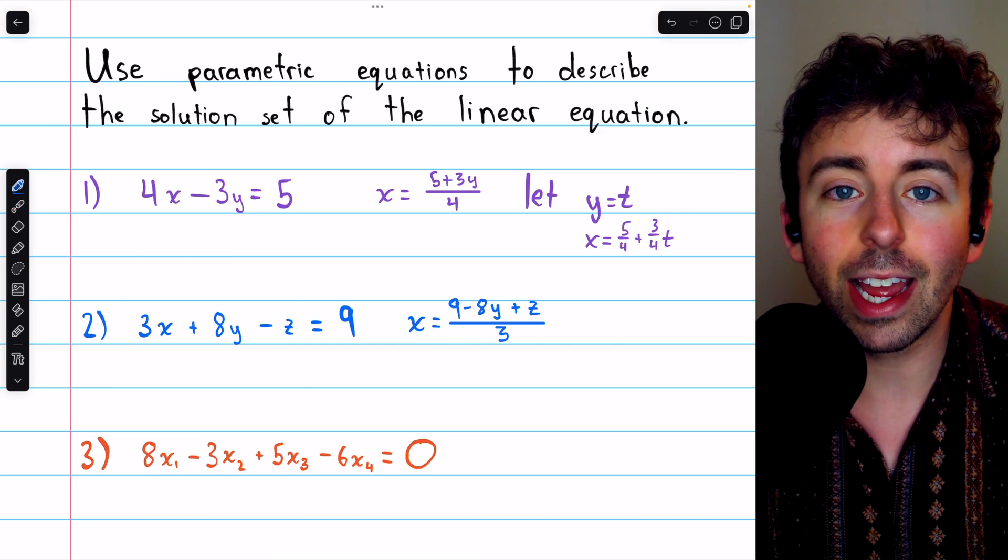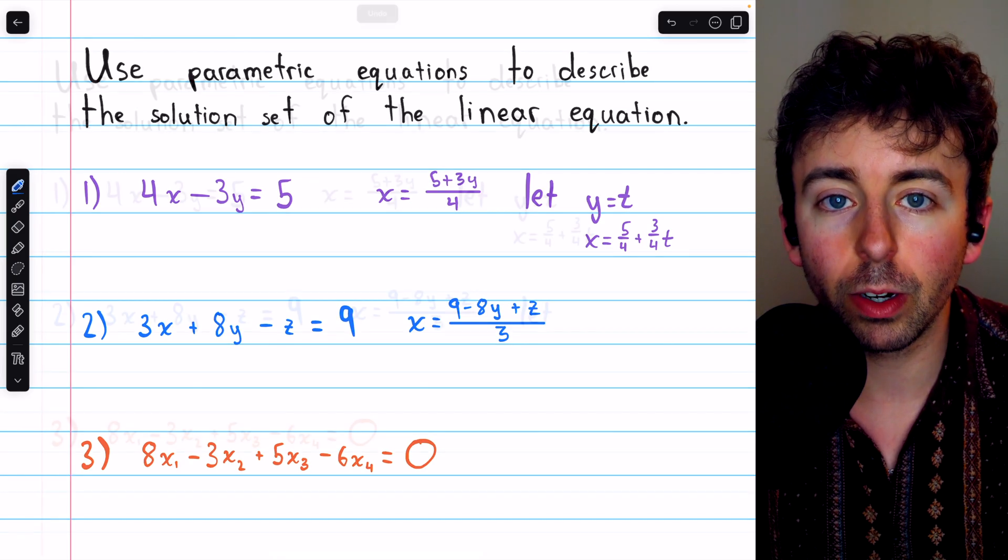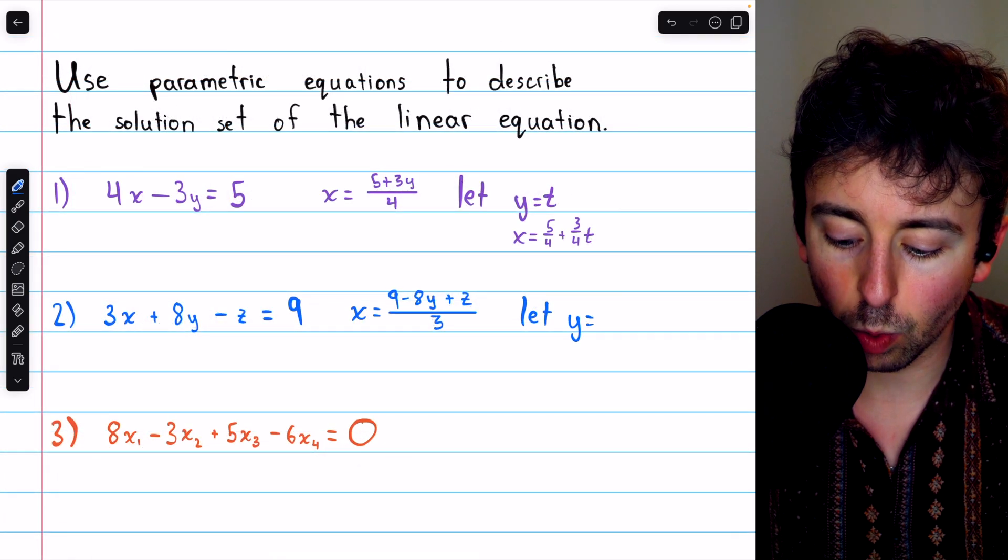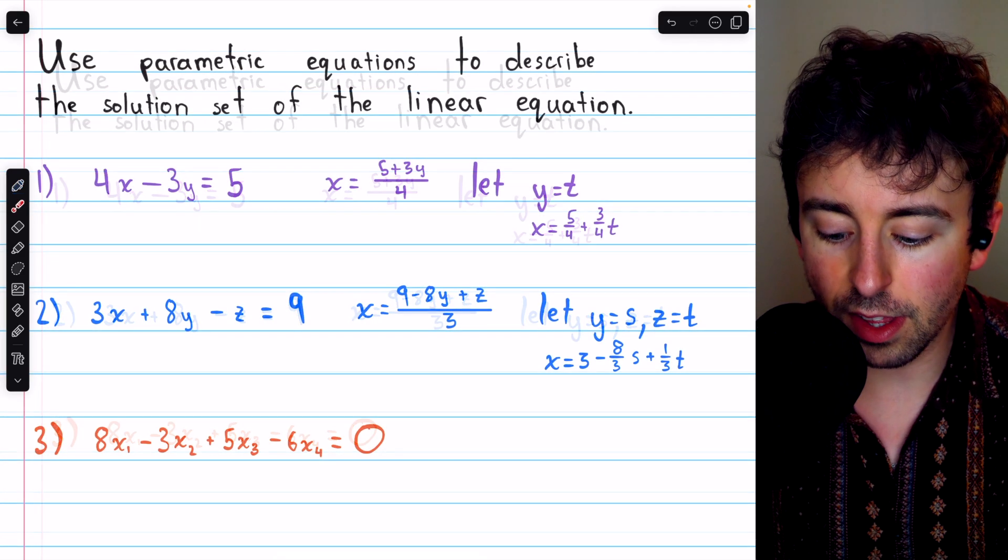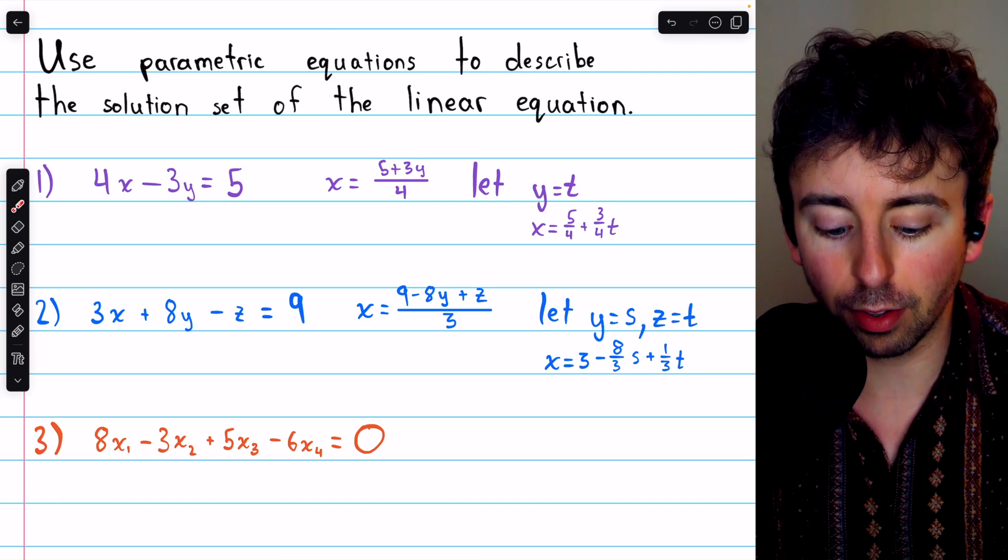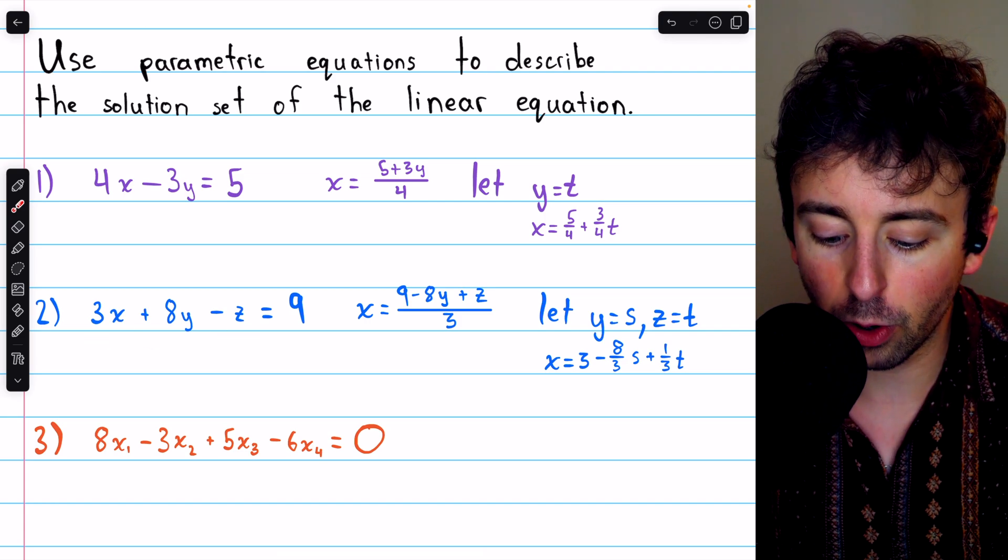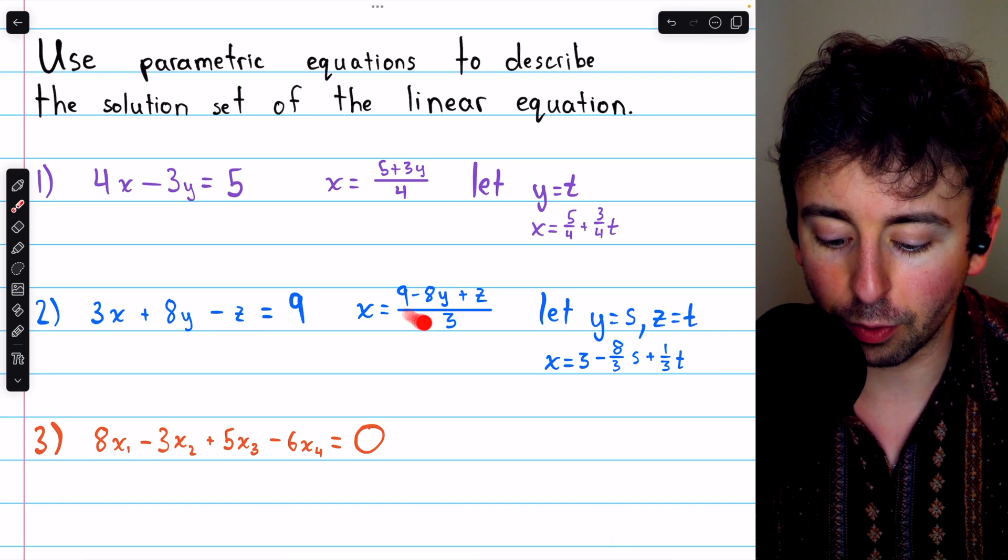So y and z will both assign two arbitrary parameters. We may let y equal s, and let's say z equals t.